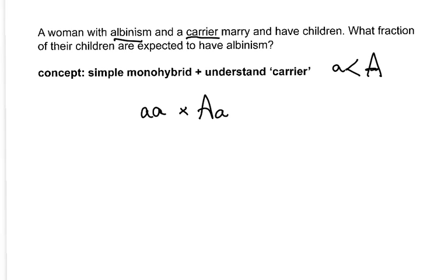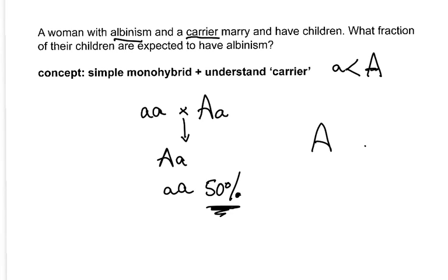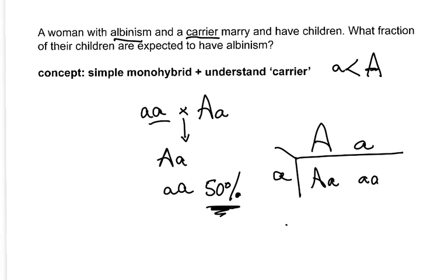What fraction of their children are expected to have albinism? From dad they can get either big A or little a, but from mom there's only one thing they can get. That leaves 50% of the kids getting albinism. If you prefer to set up a Punnett square, you can put his gametes on top — you don't need two different things for her, just that one little a. Your Punnett square looks more like a Punnett rectangle, and you'd again get the 50% answer.